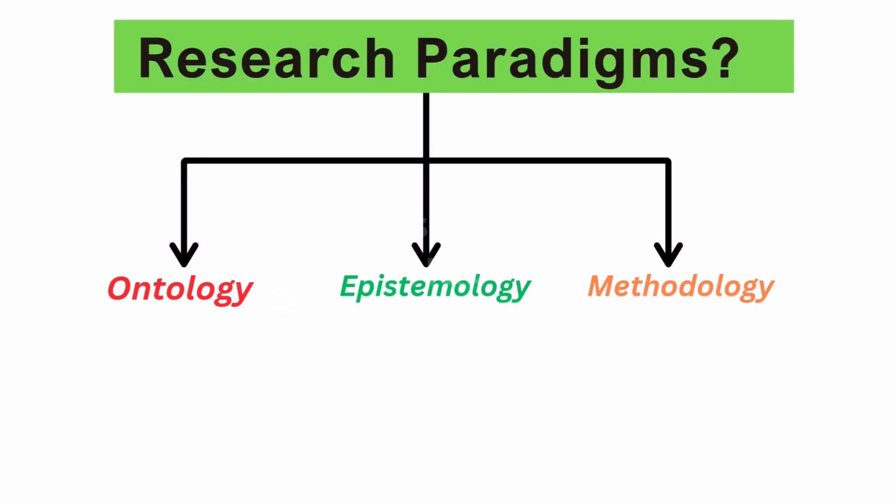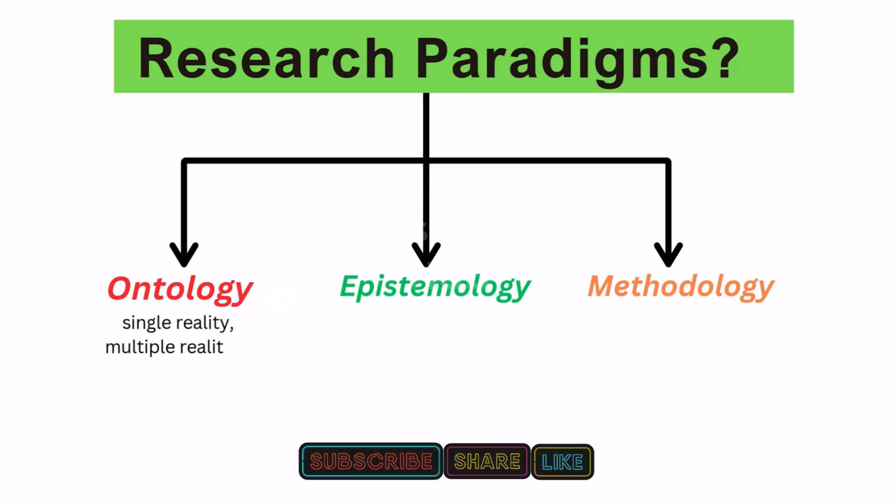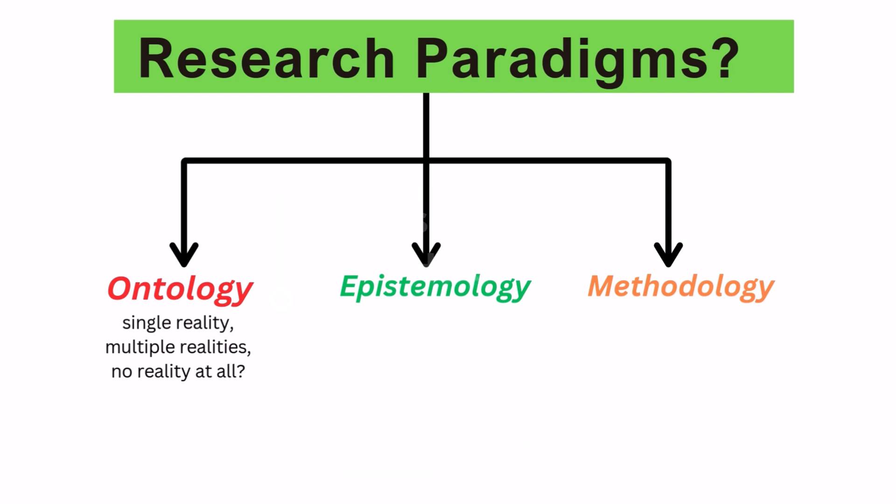One, ontology is the study of the nature of reality. Is there a single reality, multiple realities, or no reality at all? These are the questions that the philosophy of ontology attempts to answer. The oft-used example of an ontological question is: does God exist?